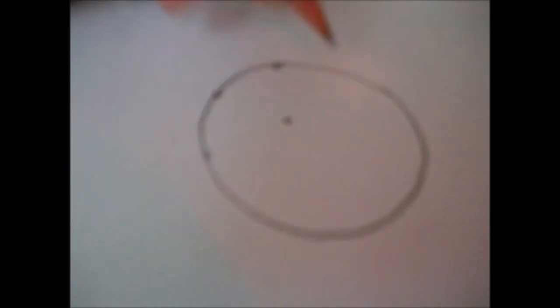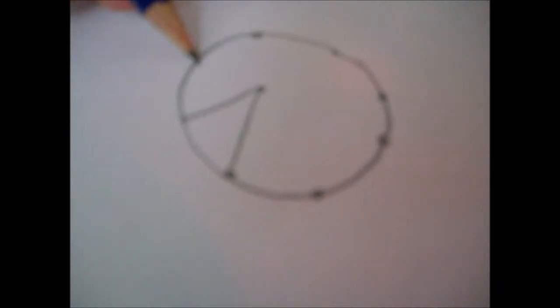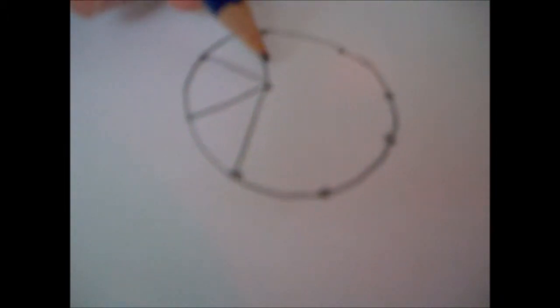Then draw dots from each of the 8 points around the circle. Draw lines from each of the 8 points to the dot in the middle.